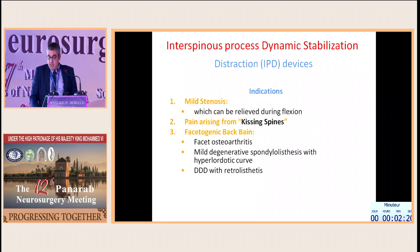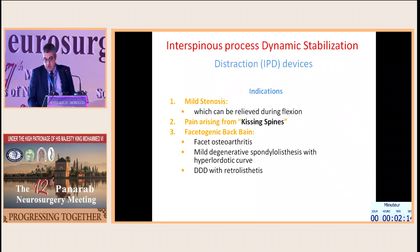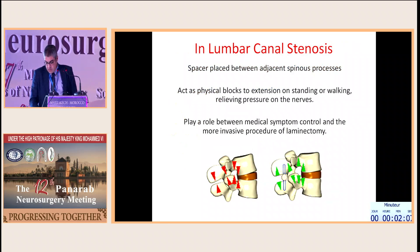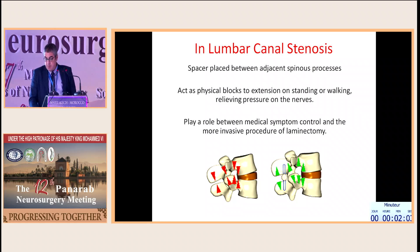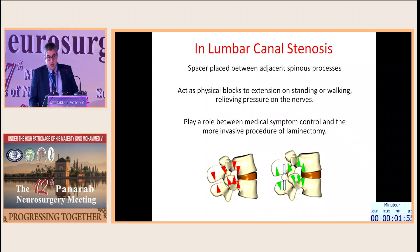The next minimally invasive technique is interspinous process dynamic stabilization with distraction devices, used mainly in mild to moderate stenosis and in facetogenic pain. The spacer placed between adjacent spinous processes acts as a physiological block to extension on standing, mimicking flexion, thereby unloading the facet and the posterior disc space.